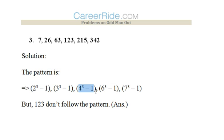6³ - 1 forms 215 and 7³ - 1 forms 342. 123 does not follow the pattern, so it would stand out of the crowd.